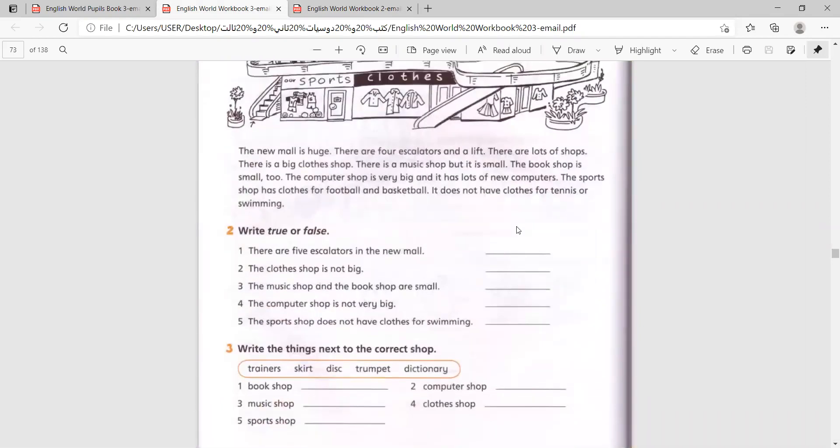The computer shop is very big and it has lots of new computers. The sports shop has clothes for football and basketball. It does not have clothes for tennis or swimming. Right, true or false?